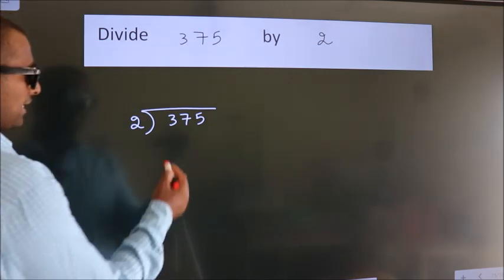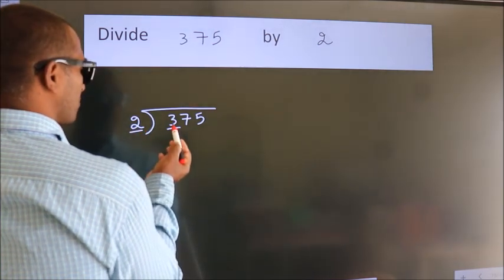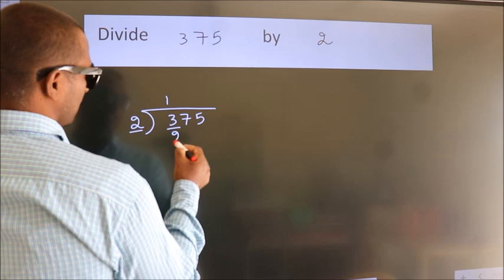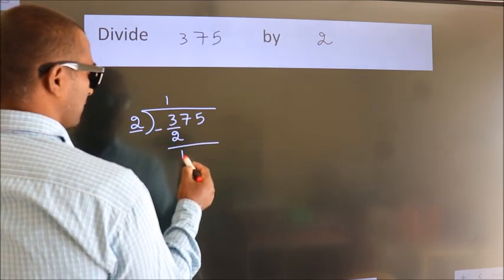Next. Here we have 3, here 2. A number close to 3 in 2 table is 2 1s, 2. Now we should subtract. We get 1.